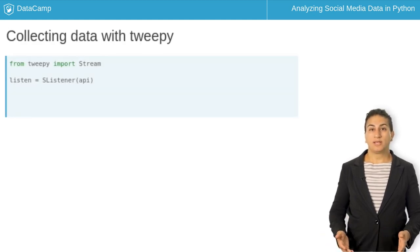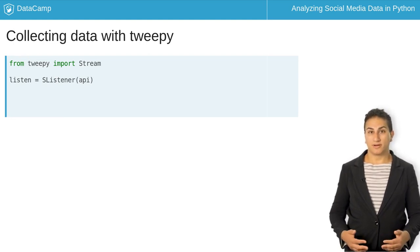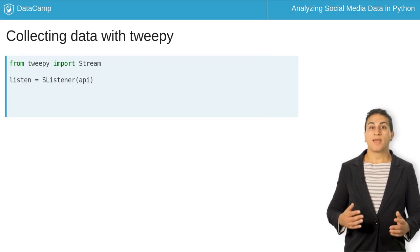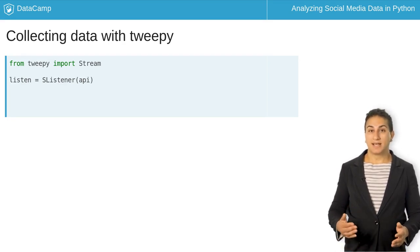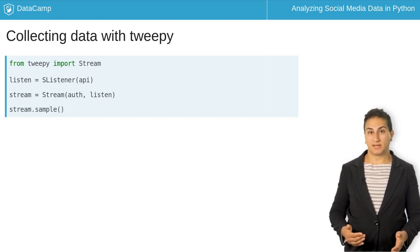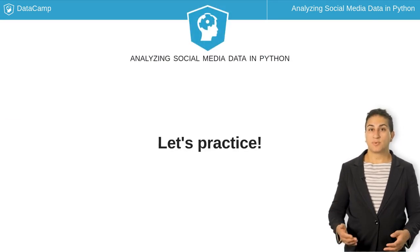Now we can get to collecting data. If we're going to take a random sample of all of Twitter, we would use the sample endpoint. First, we instantiate an SListener object. Then, we instantiate a stream object. Lastly, we call the sample method to begin collecting data. Now it's your turn — let's practice writing the code to collect Twitter data.